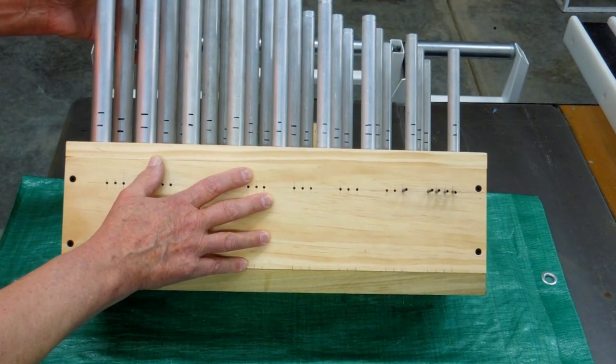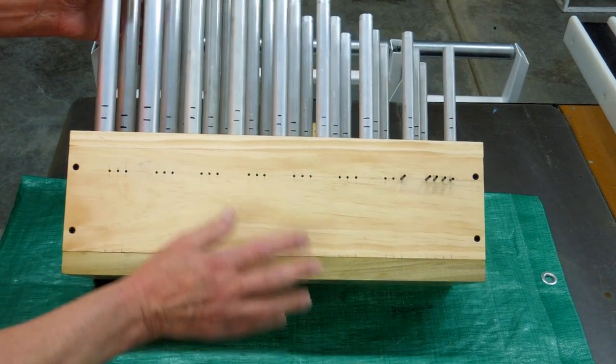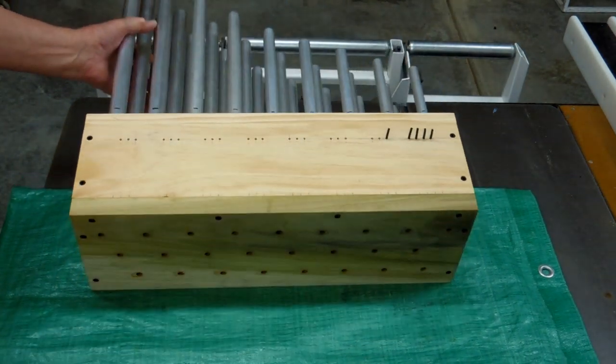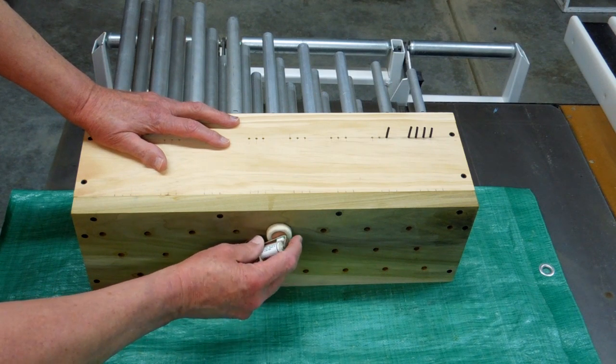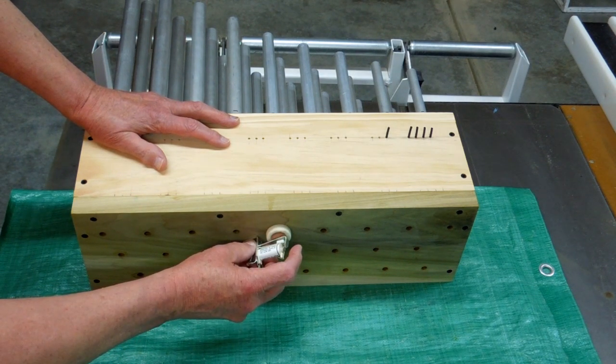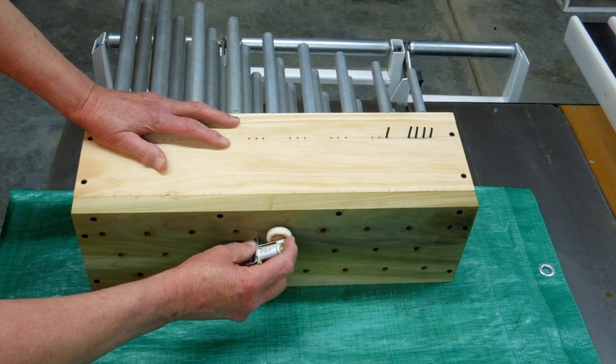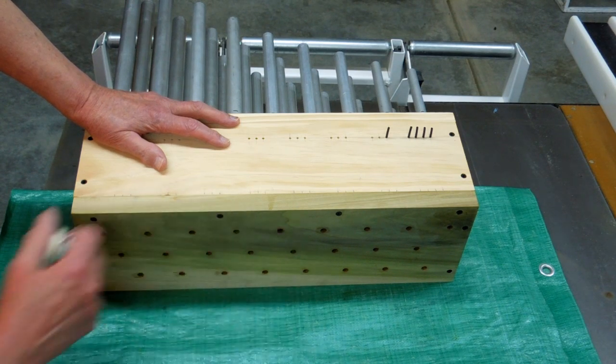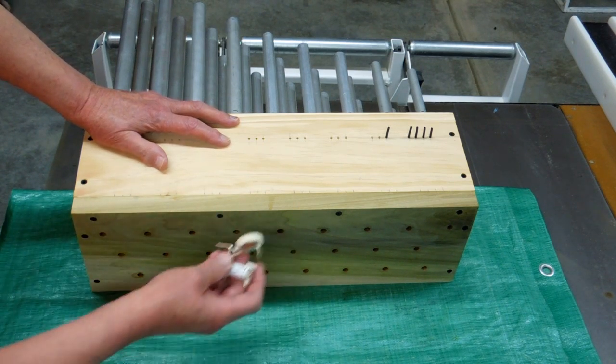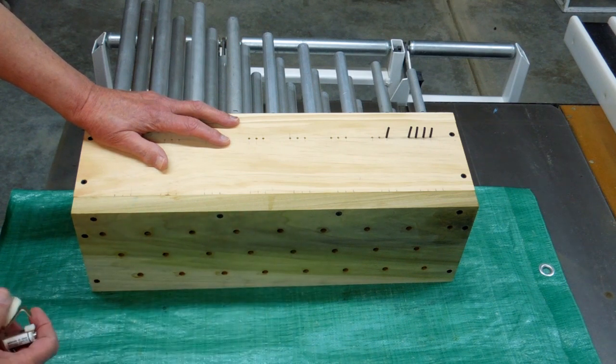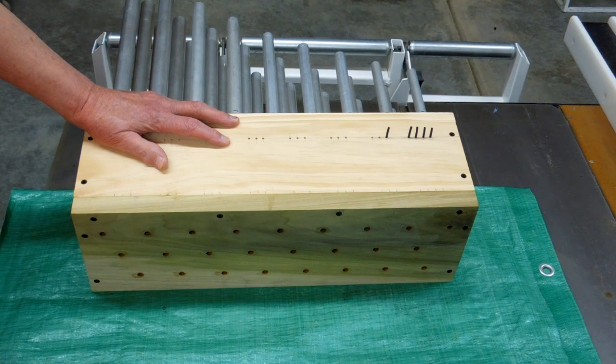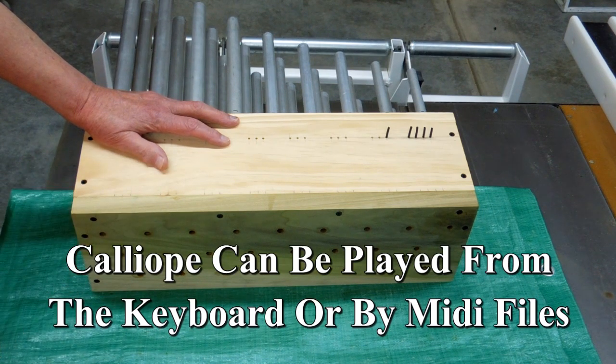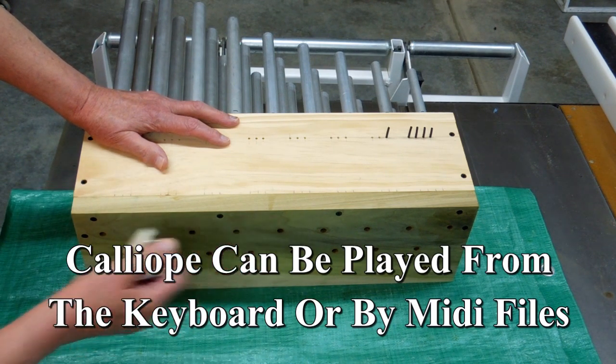This was the wind chest on the original calliope. My wind chest will be down here. Each of these holes will be covered by a pallet magnet. In this position it's sealed and when it opens it lets air go into that particular pipe. These are connected to a magnet driver. The magnet driver gets a signal either from a keyboard key, one of those micro switches, or from a MIDI reader.